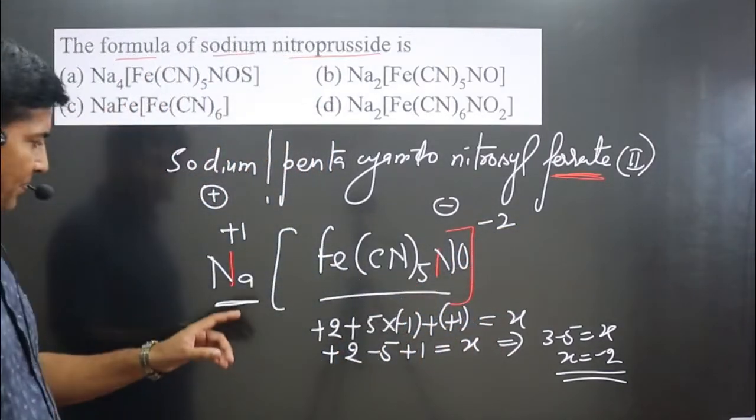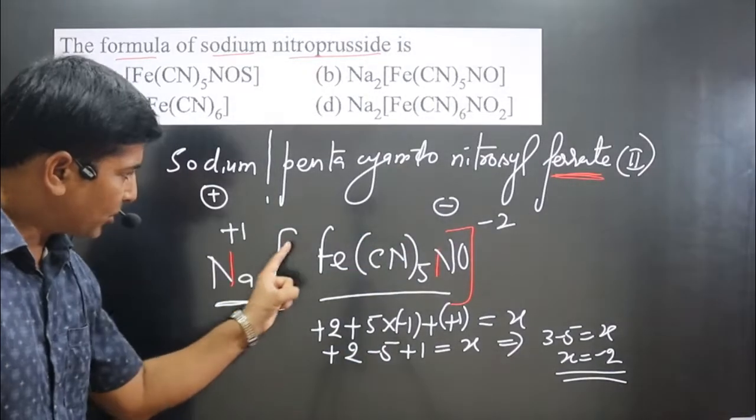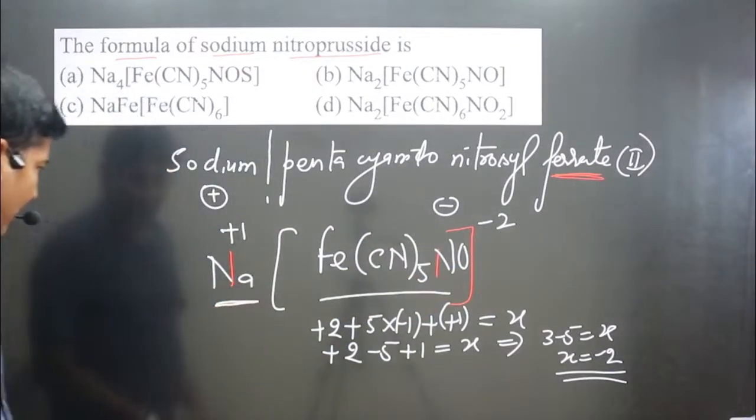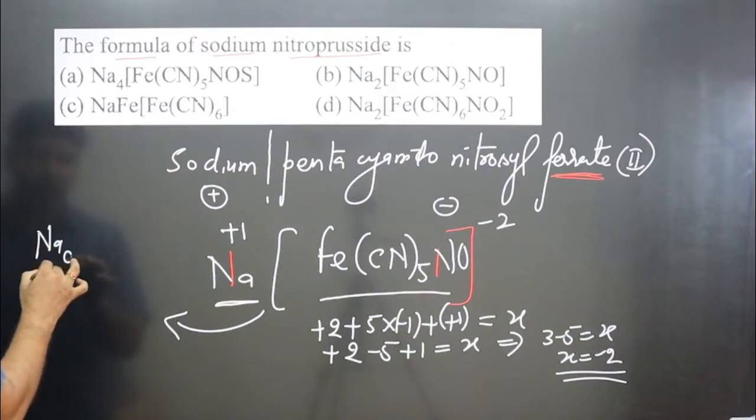Now we can balance the charge. This is plus 1 and this is minus 2. So we can crisscross this number. So 1 will go this side, 2 will come this side. So as a result, the chemical formula which we are getting, this is what, Na2 is there.